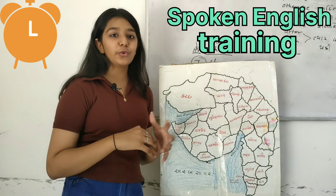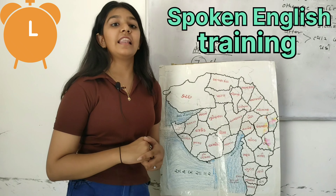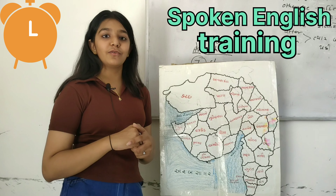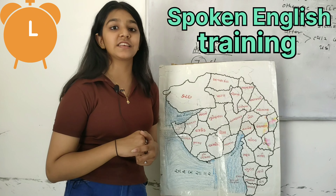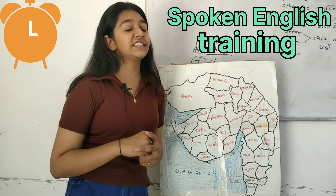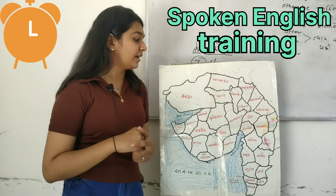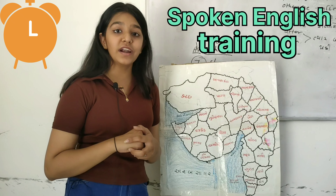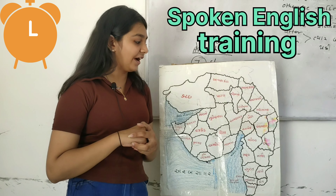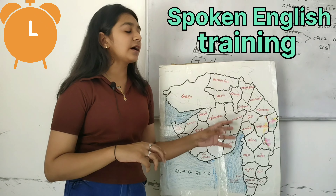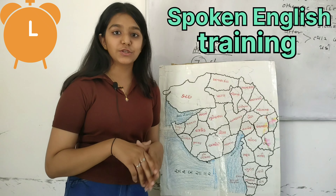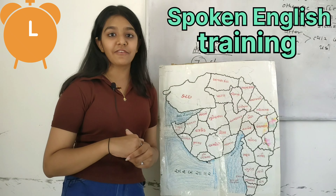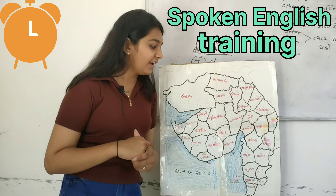There are many tourism places like Rani Ki Vav, Rudra Mahalaya, Sun Temple, and Statue of Unity. The Statue of Unity is located in Vadodara — there is the biggest statue of Sardar Vallabhbhai Patel.